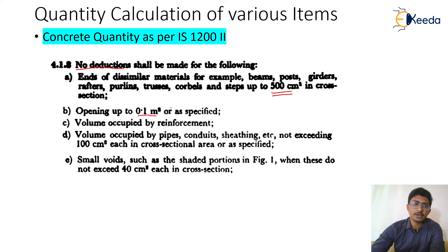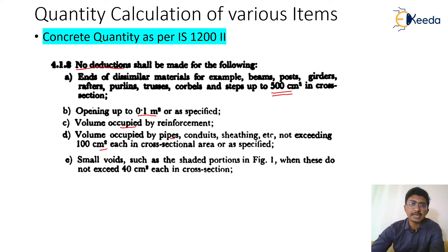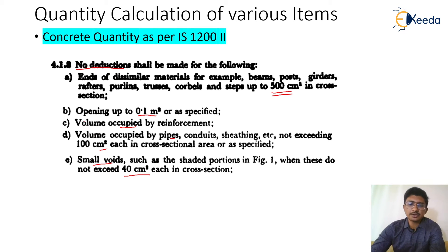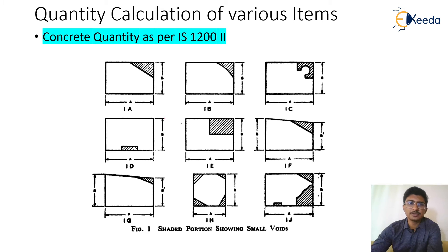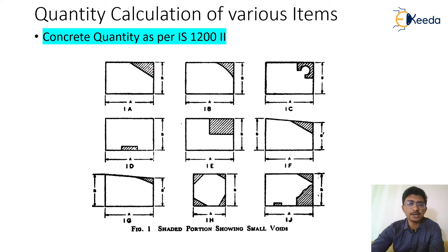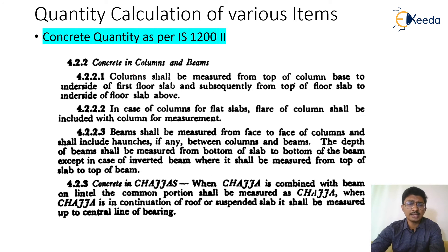The volume occupied by reinforcement is not to be deducted at all. The volume occupied by pipes and conduits not exceeding 100 cm² in cross-section also requires no deduction. Additionally, the smallest voids whose area does not exceed 40 cm² are not to be deducted from the concreting. These hatch areas shown in the images illustrate that if the area is not more than 40 cm², no quantity needs to be deducted.